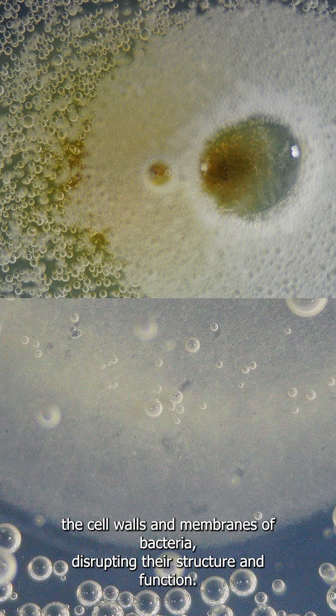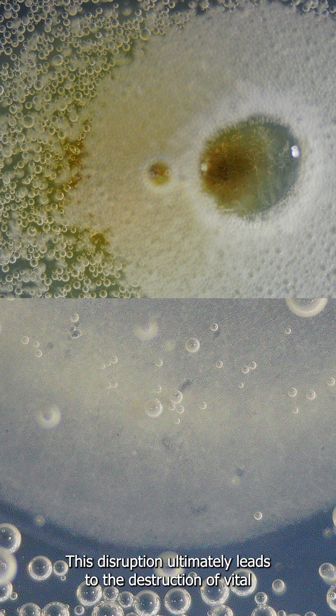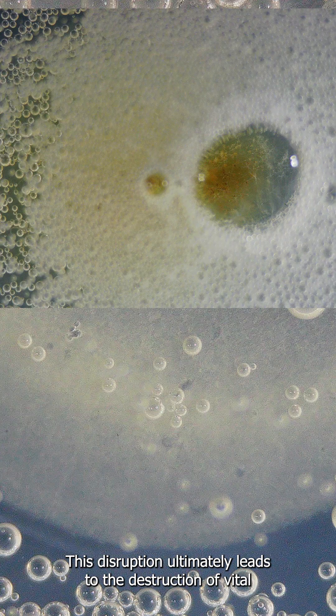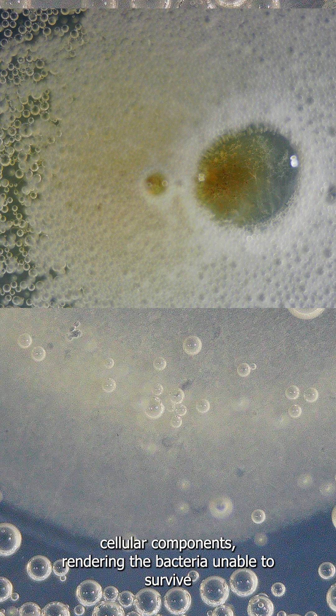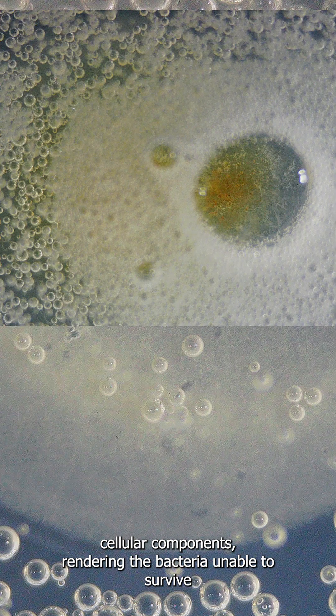Chlorine attacks the cell walls and membranes of bacteria, disrupting their structure and function. This disruption ultimately leads to the destruction of vital cellular components, rendering the bacteria unable to survive.